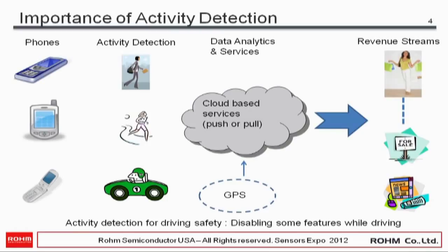For example, you could present discount coupons. If you find out that someone is out of their home area, in a shopping area, walking in the evening — not sitting in a conference room in a meeting — that's when you'd want to present discount coupons. Additionally, you could do activity detection for driving safety: if you detect that a person is driving, you could disable texting.